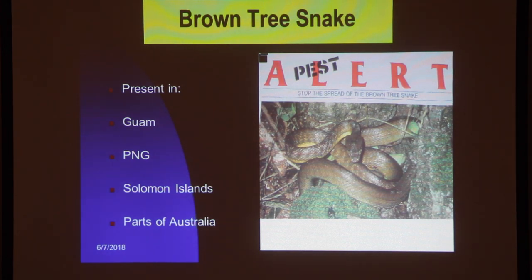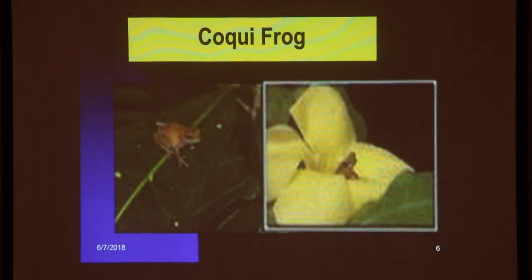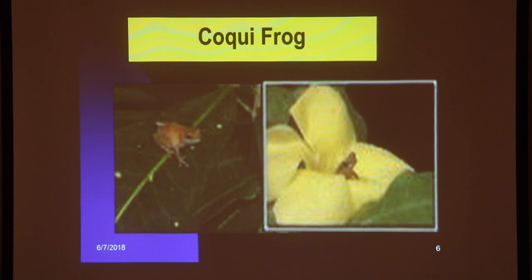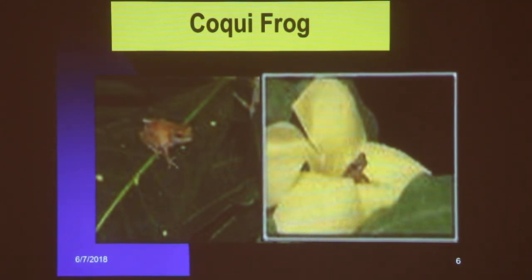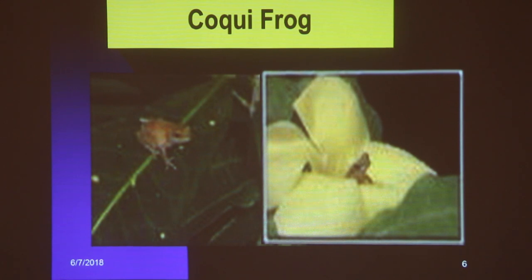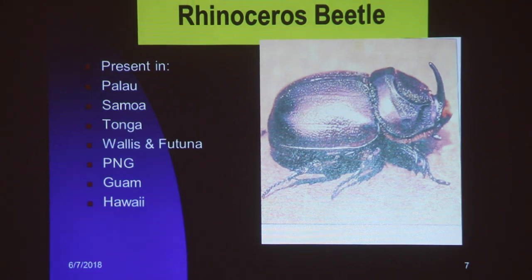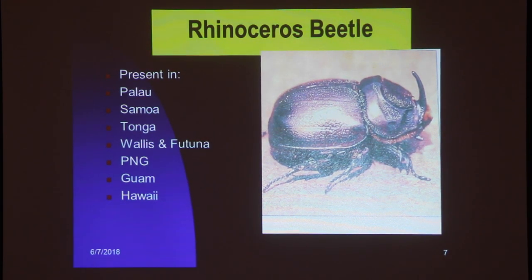Another very bad pest to be alert about is the brown tree snake. You may have heard that this snake is in Guam where it is doing a lot of damage — it wiped out three or four bird species and also kills chickens. It is also in PNG, the Solomons, and parts of Australia. Another one is the coqui frog — very tiny — it is now in Guam, and this frog makes so much noise that people cannot sleep at night. In parts of Hawaii, people moved away because of it. We don't have it here.